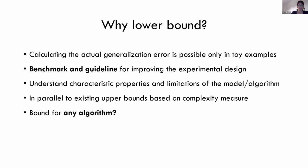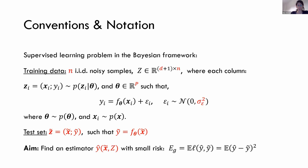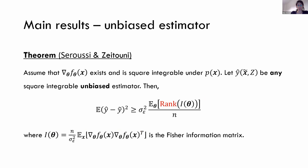This is in parallel to existing upper bounds based on complexity measures, and we want a bound valid for any algorithm. In the supervised learning problem, we have n i.i.d. noisy training samples where the true function is f(theta), and a noiseless test set. We seek an estimator y-hat minimizing mean squared error risk. Our first theorem states: for any unbiased estimator, the generalization error is bounded by the expected rank of the Fisher information matrix divided by the number of samples — complementary to what's been seen today.